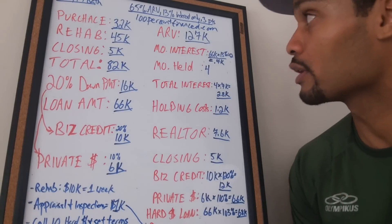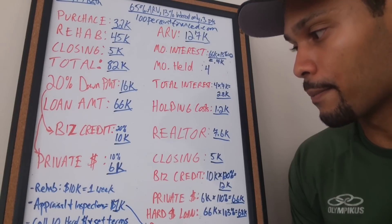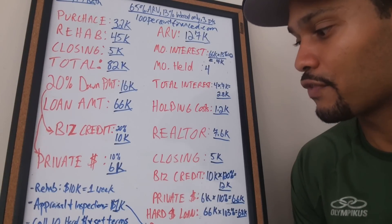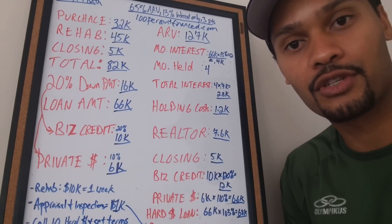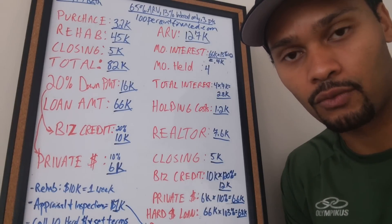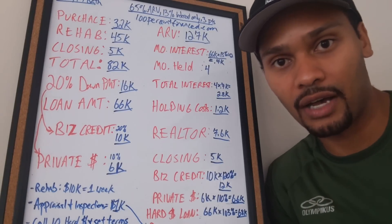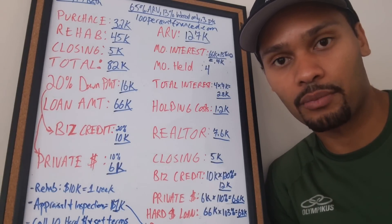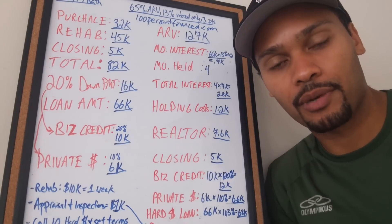So let's say a realtor found this property for us. The first thing I think you need to do is find the money. When I say find the money, I mean find someone who has hard money and who'd be willing to lend — so find a hard money lender first.